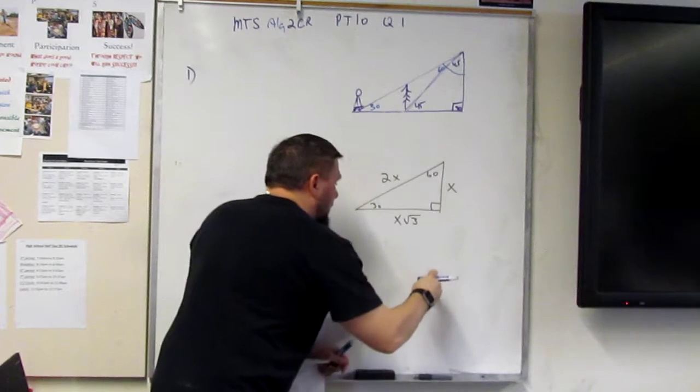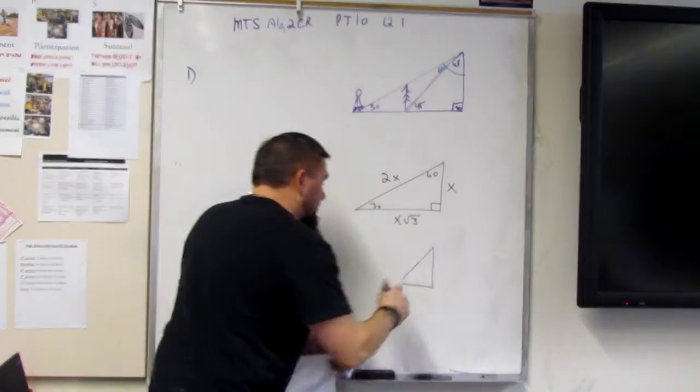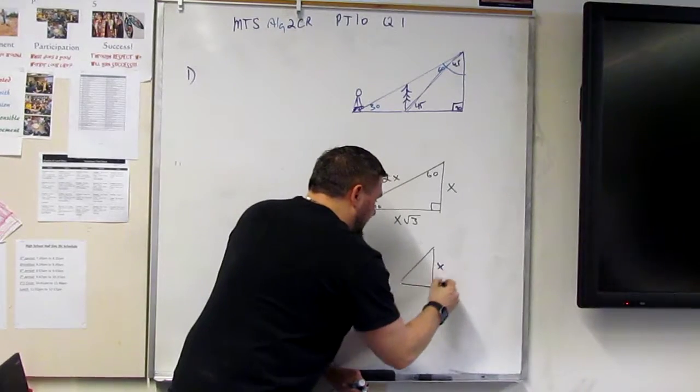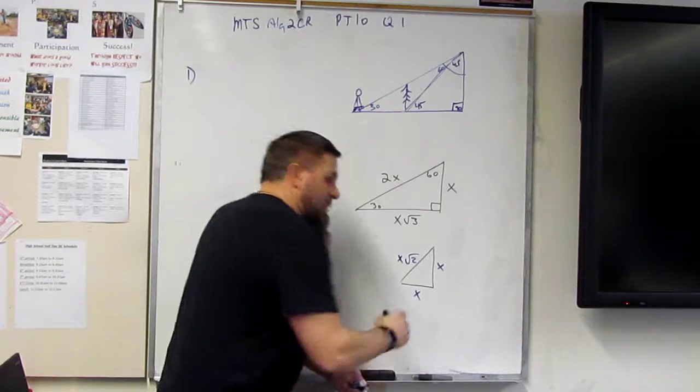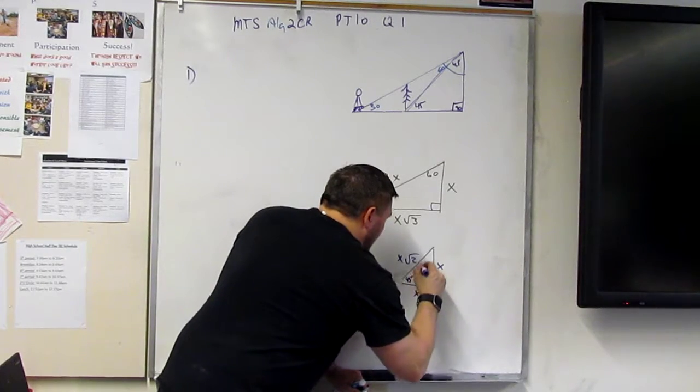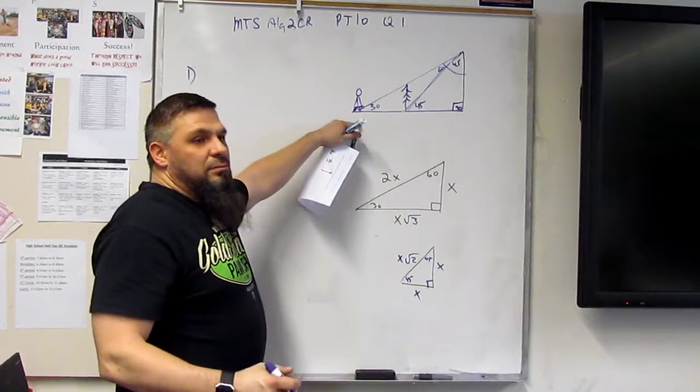The other one is this guy. This is the 45-45, where we have x, x, and x square root 2. Okay? So once we know these, we're solid.